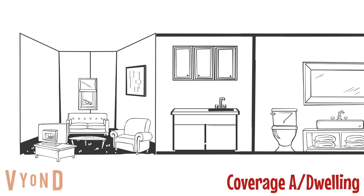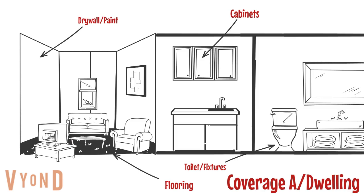Coverage A, or dwelling coverage, is the policy limit to go towards rebuilding the interior of your unit following a loss. It will cover things such as drywall, paint, cabinets, flooring, and other fixtures that are typically anchored to the unit.